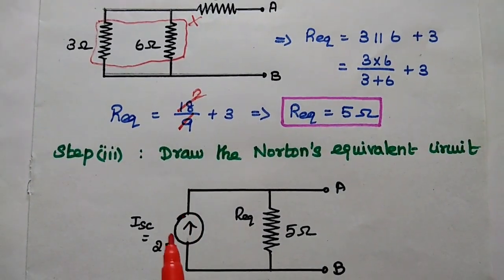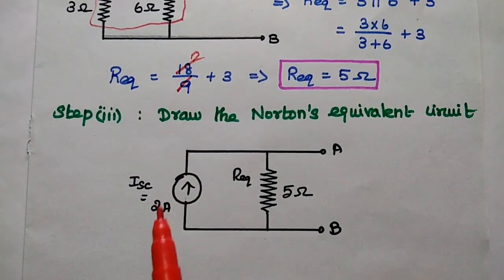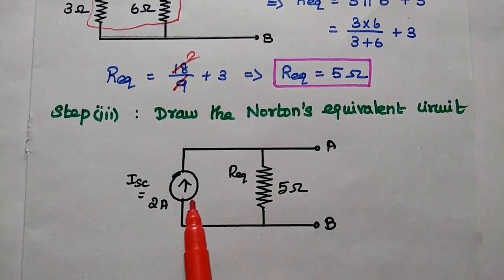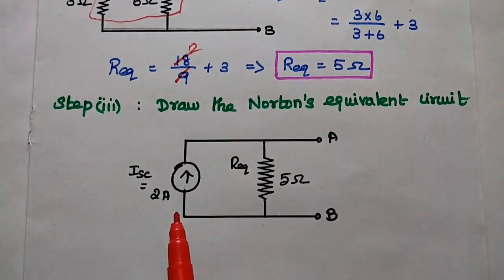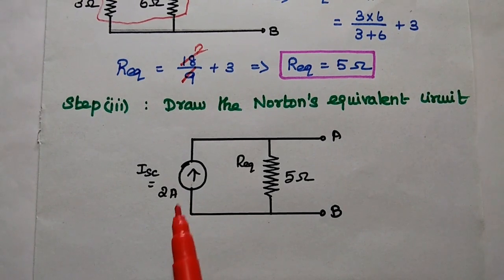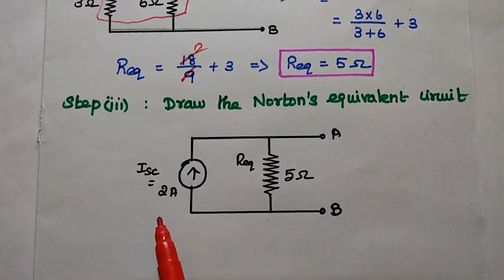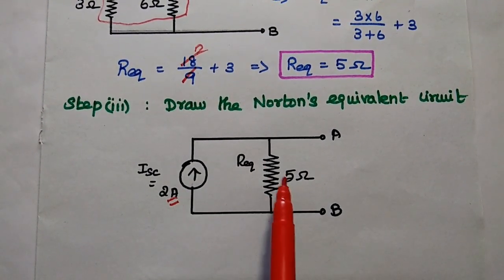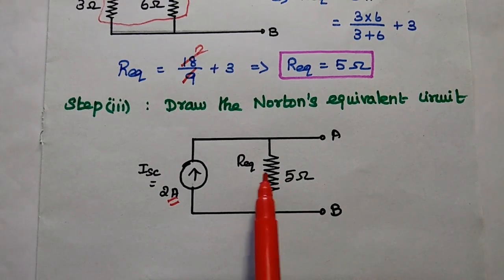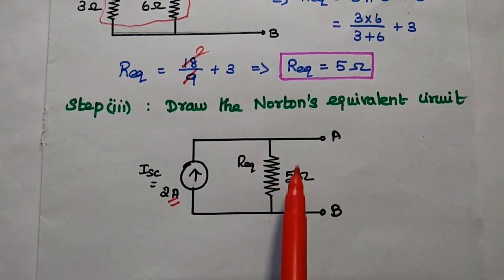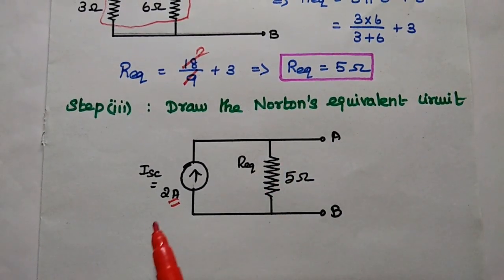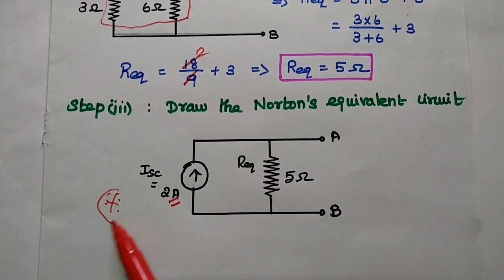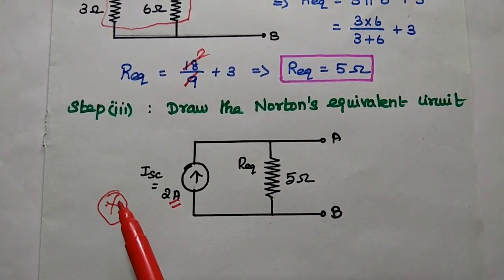The last step is to draw Norton's equivalent circuit for the given diagram. The short circuit current is 2 amperes, and the equivalent resistance is 5 ohms, so Norton's equivalent circuit is a 2 ampere current source in parallel with 5 ohms. This is the final answer, and this is a very important problem.